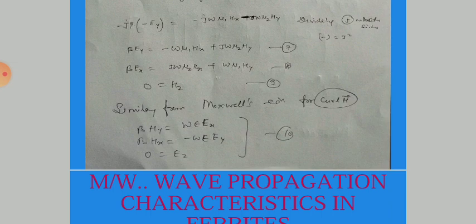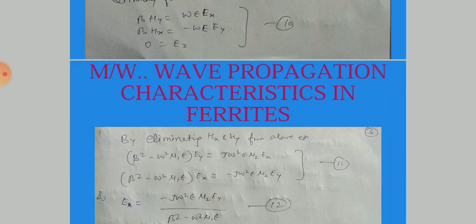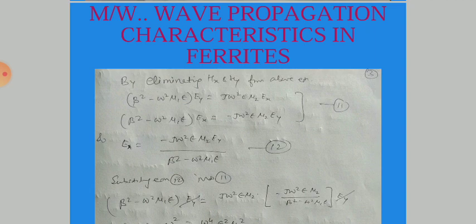Similarly from ∇×H, we obtain: β·hy = ωε·Ex and β·hx = −ωε·Ey. By eliminating hx and hy in the above equations, we get: (β² − ω²μ₁ε)·Ey = jω²ε·μ₂·Ex, and (β² − ω²μ₁ε)·Ex = −jω²ε·μ₂·Ey. From the first equation, Ex = −jω²εμ₂·Ey / (β² − ω²μ₁ε).